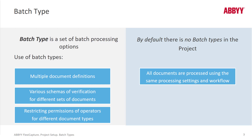When you create a batch type, you can set up multiple document definitions or just a few. In other words, you can limit which of your project's document definitions are applied at the batch type level. You can also set up different workflow scenarios and preprocessing scenarios. You can restrict permissions of certain operators to certain project batch types.